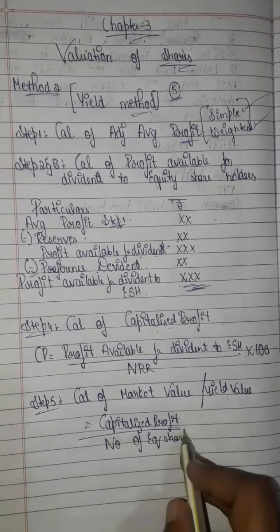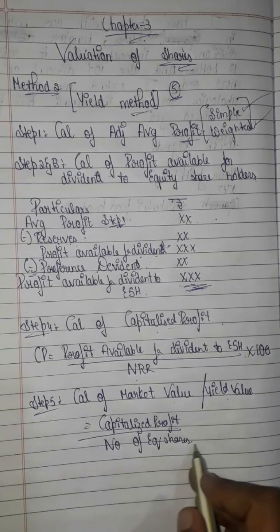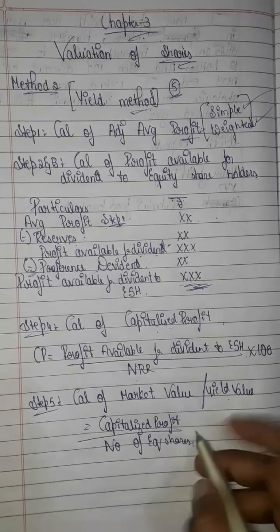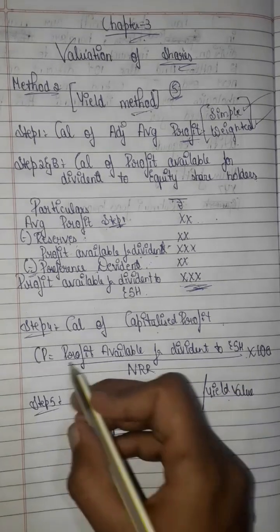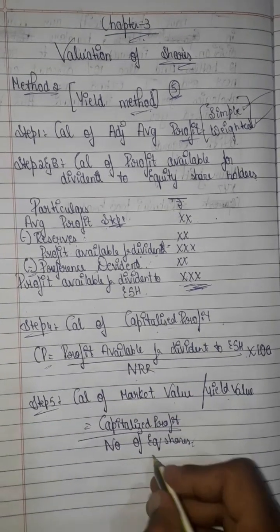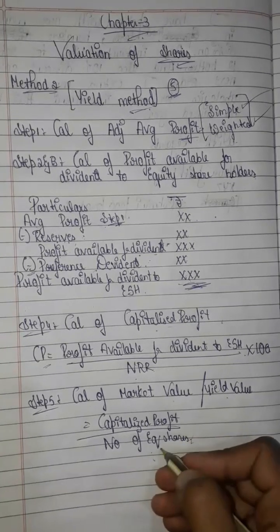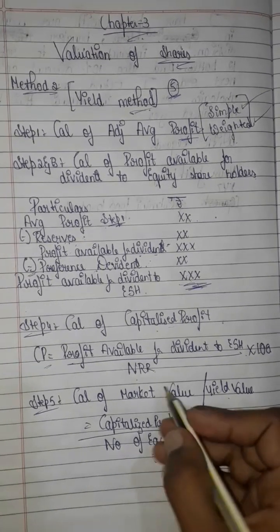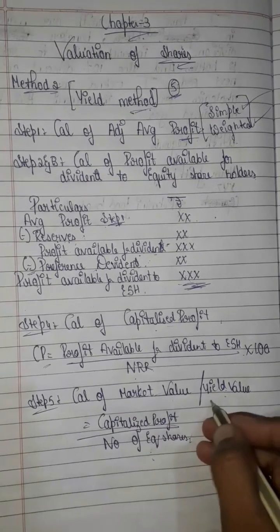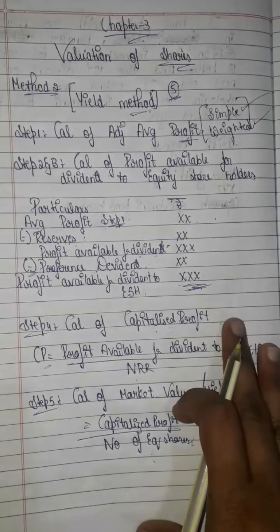The yield value is calculated as capitalized profit divided by number of equity shares. Step 4 involves finding the number of equity shares, and step 5 gives us the market value or yield value. This is the format for the yield value method.